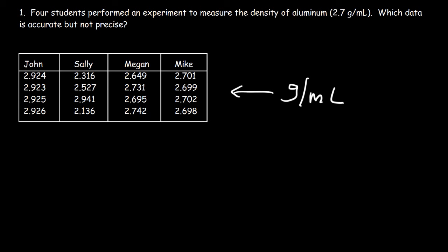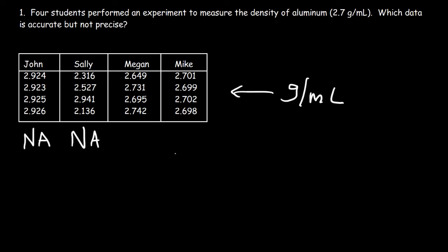Let's start by focusing on accuracy. Looking at John's data — 2.9 is not very close to 2.7, so his data is not accurate. Now what about Sally's data? Her numbers vary widely and are not close to 2.7 at all, so her data is also not accurate.